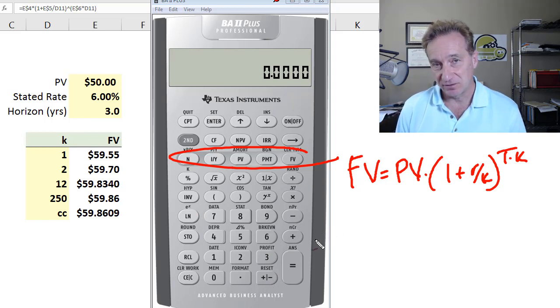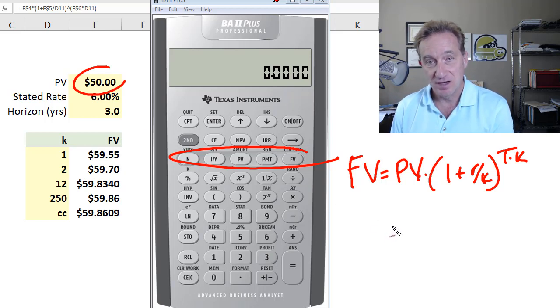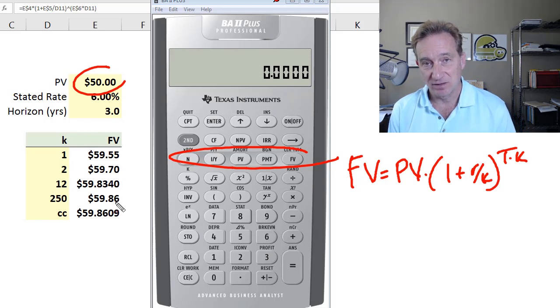And then we'll do it in reverse. That is to say, discounting a future value, in this case $50, back three years at monthly compound frequency or continuous compound frequency.